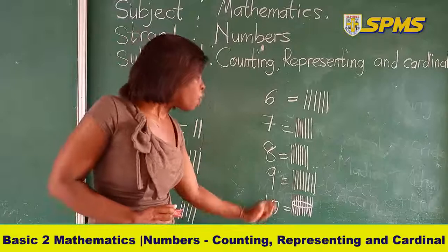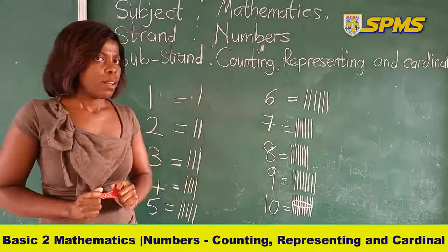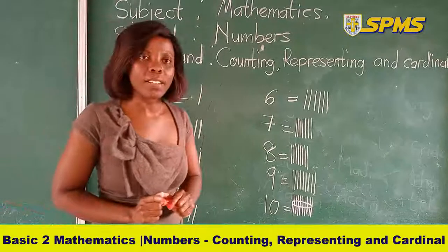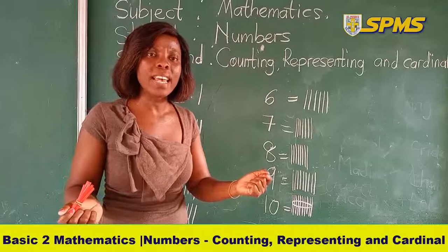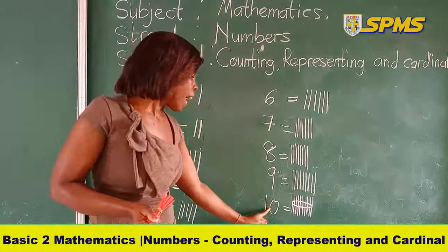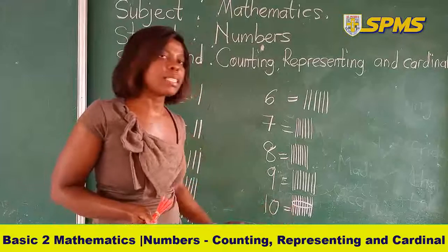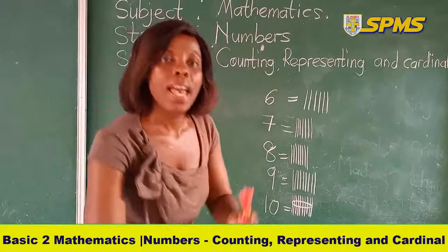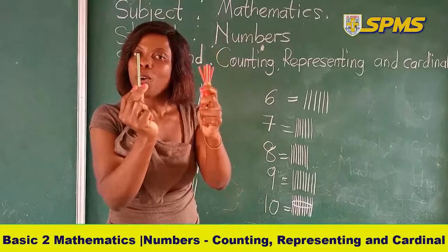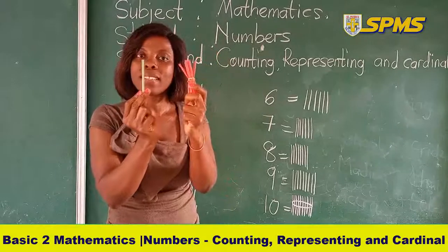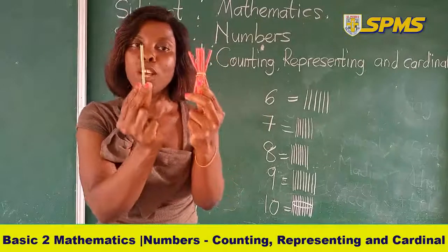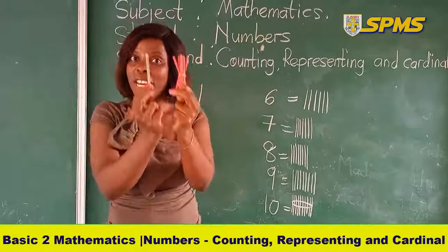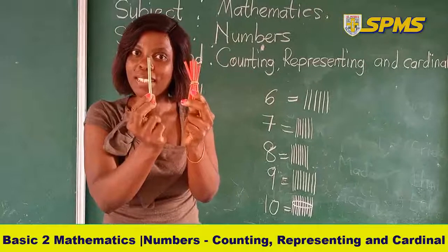Now, when you move from 10, what number follows 10? 11. How will you represent 11? We have 10 with a bundle. So 11 will be 1 bundle with 1 loose straw. A bundle and a loose straw. So the moment you see this in your book or on a board, you know the number is 11.